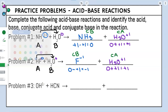Let's look at number three. First, we identify which one's our acid. Neither of these are water, so we look at both. If something starts with hydrogen, it's automatically an acid. HCN starts with hydrogen, so that's going to be our acid. Therefore, OH- is going to be our base.